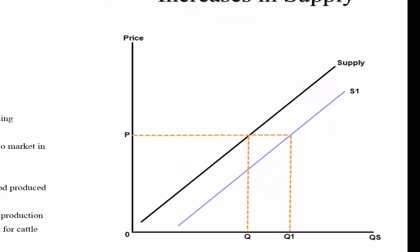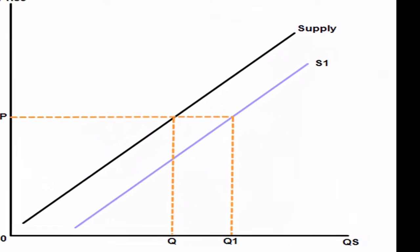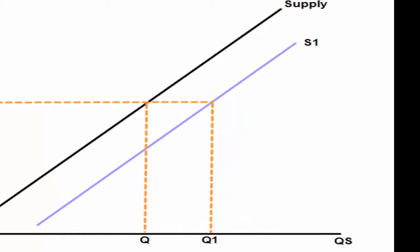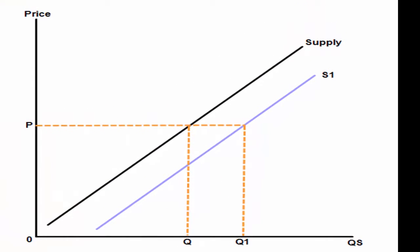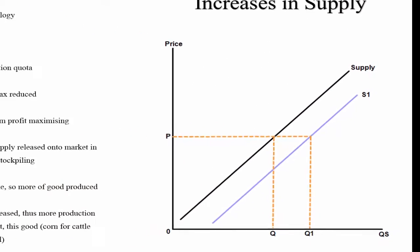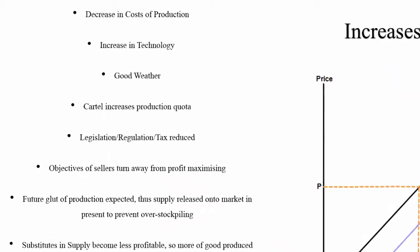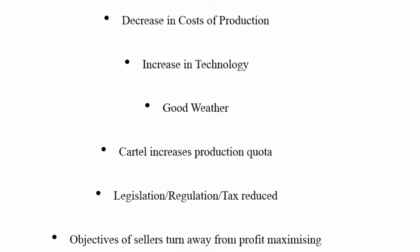We would show increases in supply by moving the supply curve to the right on our price and quantity axis. You can see that on the graph there. Let's analyze some increases in supply and how it affects the supply curve.